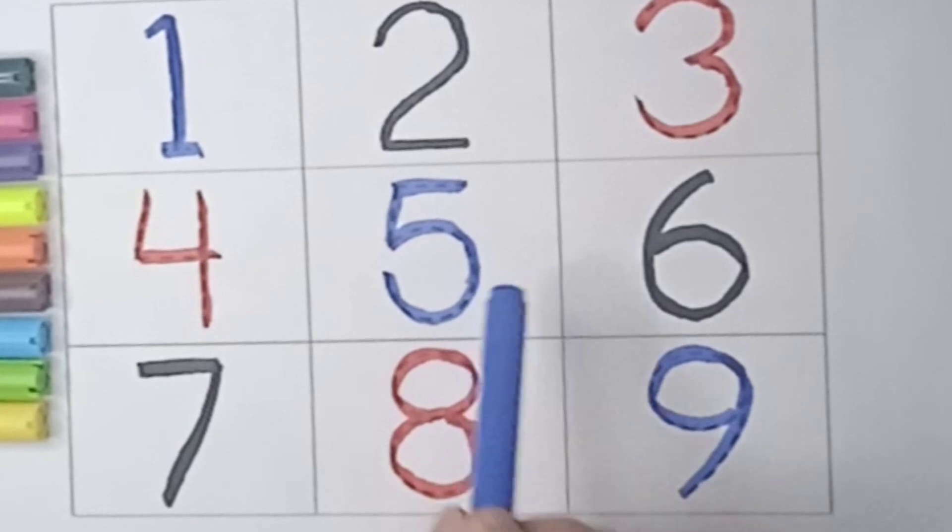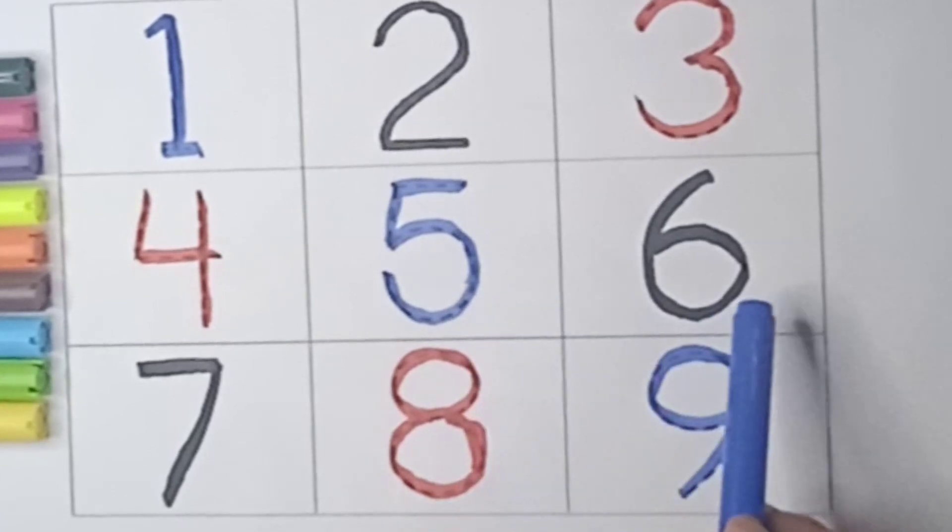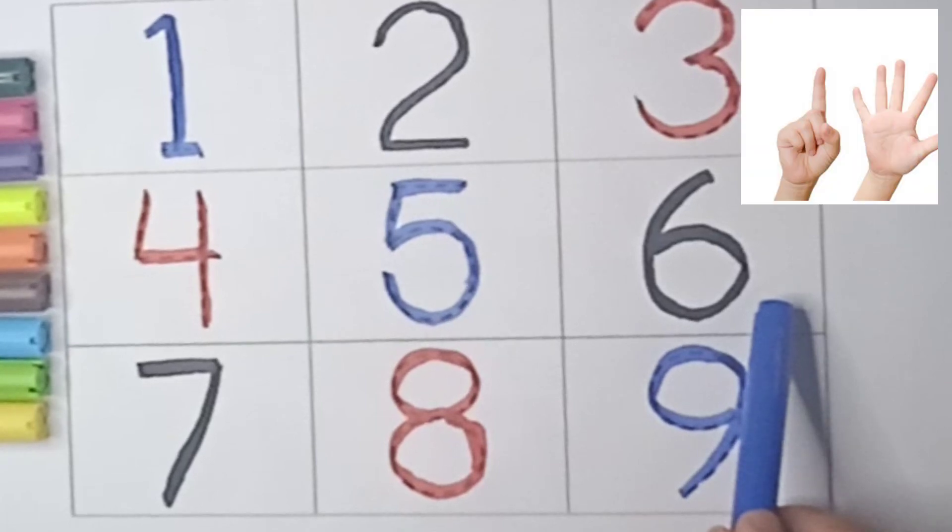Next number is 6. Say 6. Count your fingers. 1, 2, 3, 4, 5, 6.